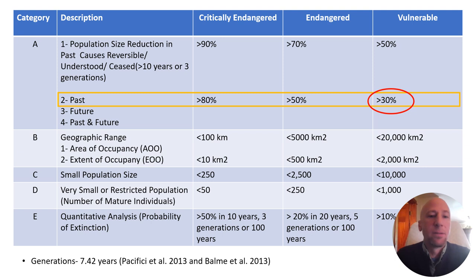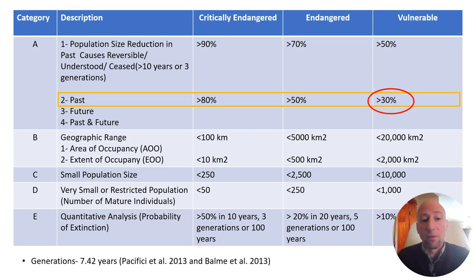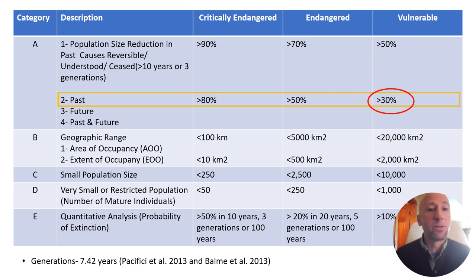When assessing a species, we look at specific subdivisions within each category. Under Criteria A — population size reduction — A1 is population size reduction in the past where causes are reversible, understood, and have ceased in the last 10 years or three generations. For leopards, generation time is about 7.42 years, so three generations is a little over 22 years. For a Critically Endangered status, the population would have to be reduced by 90% in that period; for Endangered, 70%; for Vulnerable, greater than 50%.